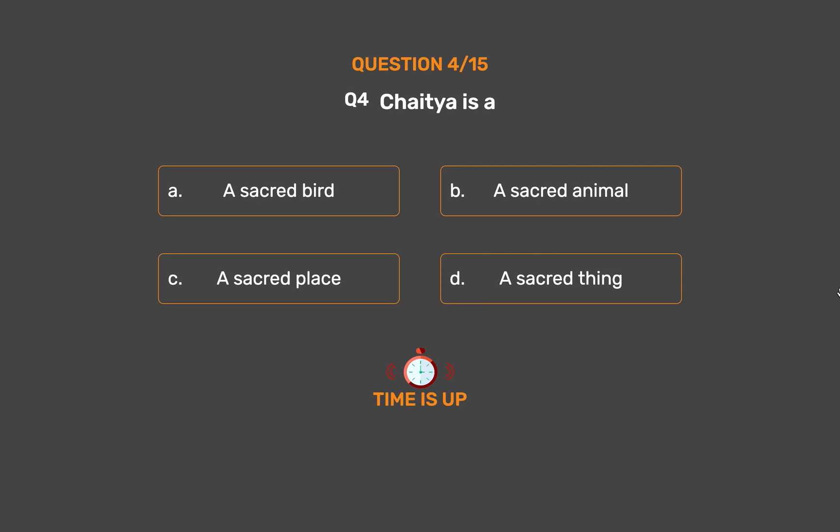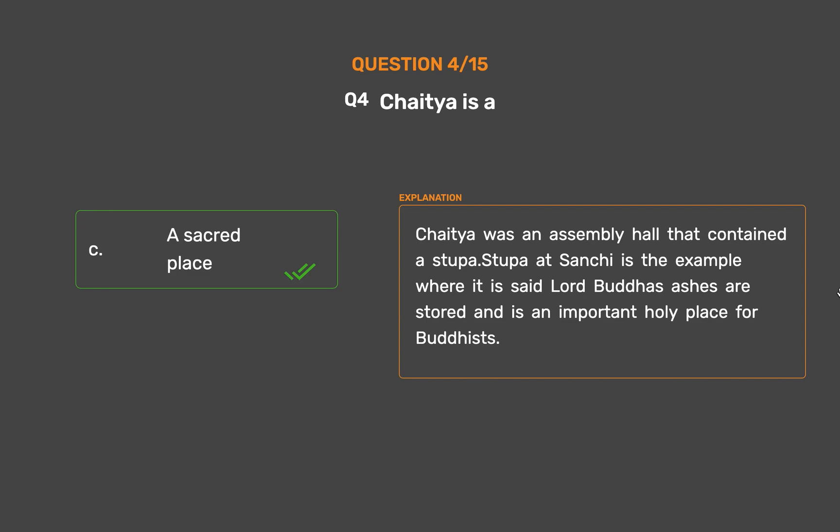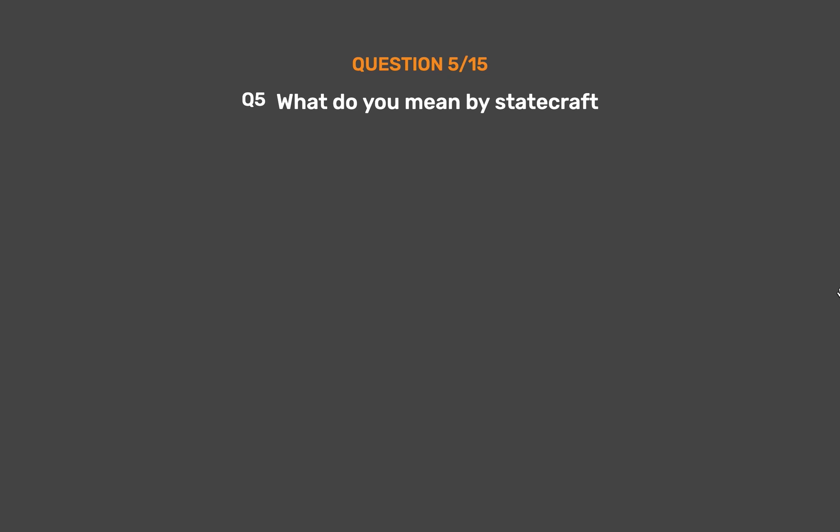The correct answer is Option C: A sacred place. Chaitya was an assembly hall that contained a stupa. The stupa at Sanchi is an example where it is said Lord Buddha's ashes are stored, and is an important holy place for Buddhists.